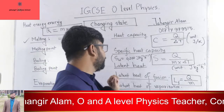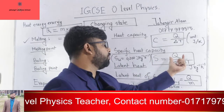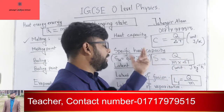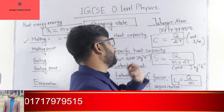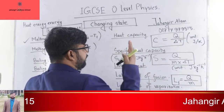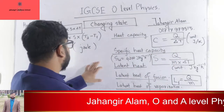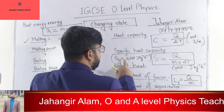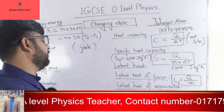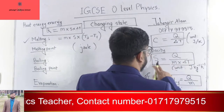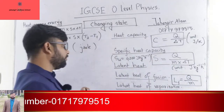Now, specific heat capacity, denoted by S. Specific heat capacity is the amount of heat energy required per unit mass to raise the temperature by one unit — one Kelvin or one degree Celsius. It is a material characteristic. For example, the specific heat capacity of water is 4200 Joule per kilogram per Kelvin. The SI unit of specific heat capacity is Joule per kilogram per Kelvin.